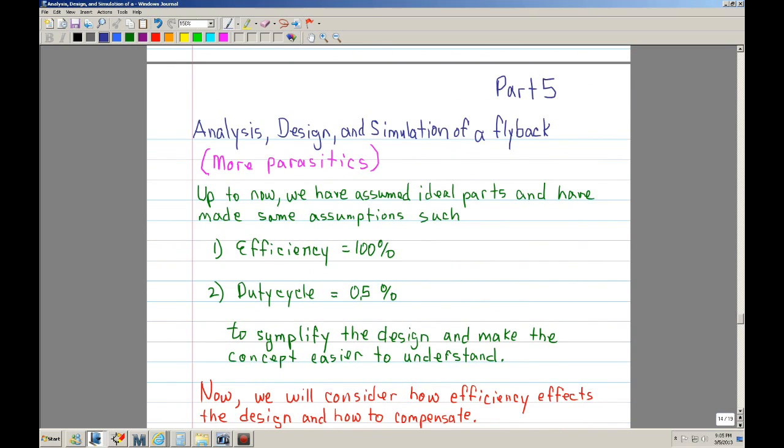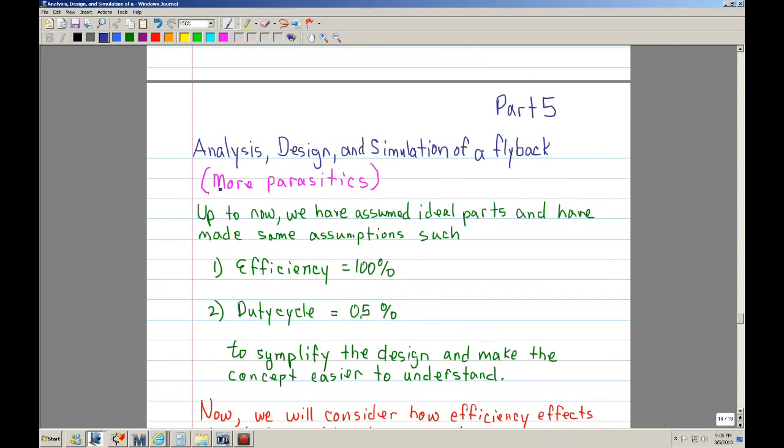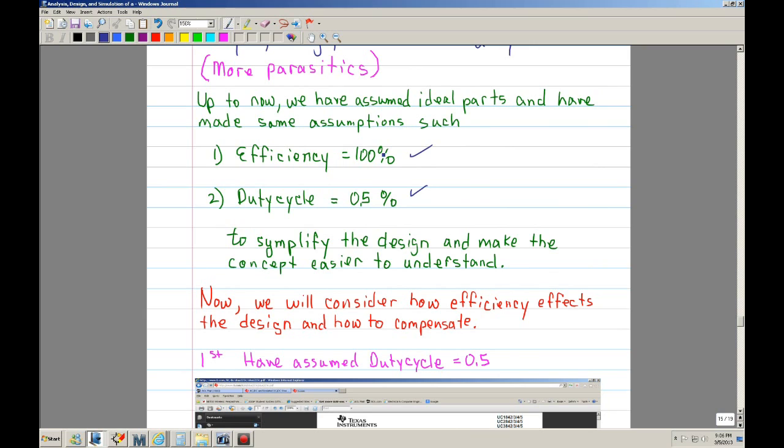So now in this part, we're going to deal a little bit more with parasitics. Up to now, we have assumed that the parts are ideal and we have made other assumptions. The first assumption is that the efficiency is 100%. And then the other assumption is that the duty cycle is going to be 0.5. Let's examine these two. The reason I was using these assumptions was to simplify the design or to make the concept easier to understand.